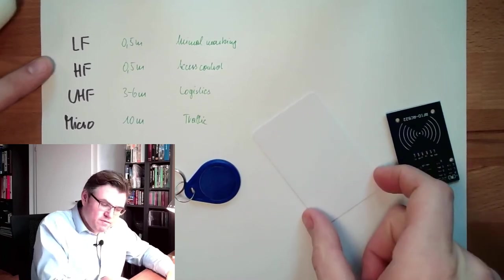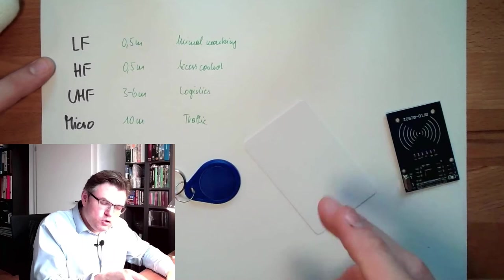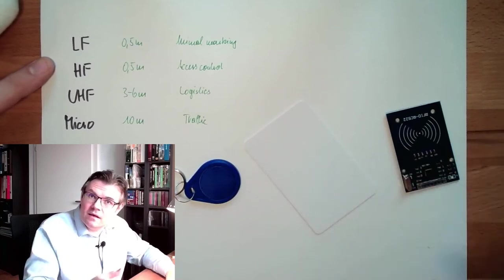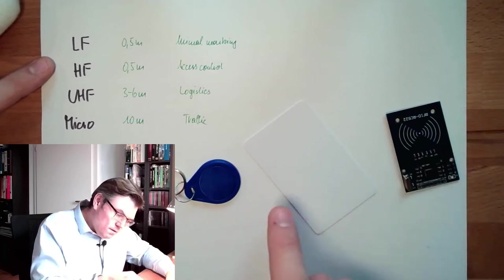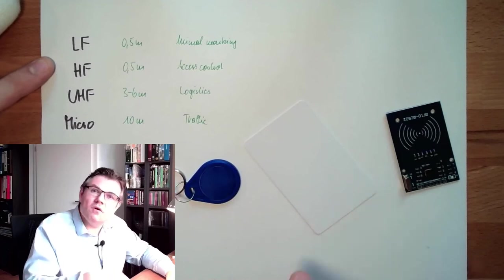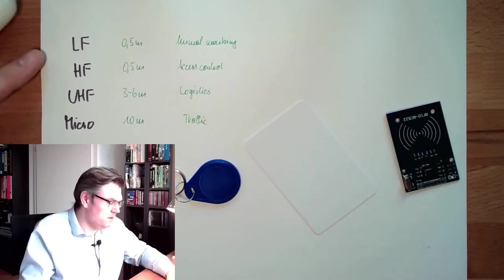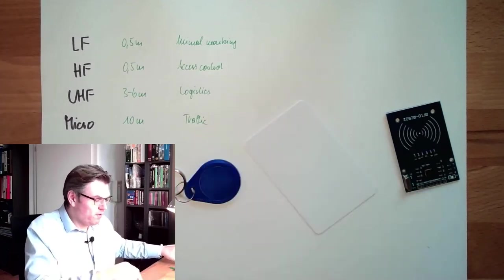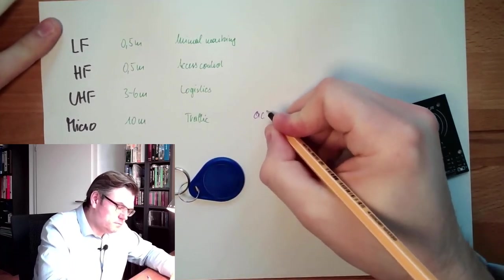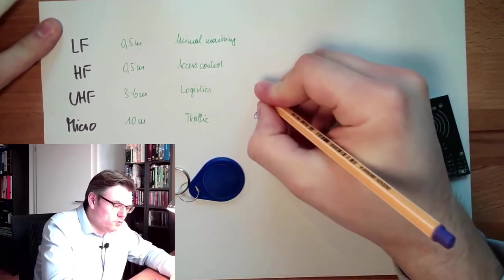There are also active transponder types which contain a battery and actively send. The passive ones need to be activated by the reading element, and the active ones are sending actively. Usually these microwave things, they are active, and those are passive.